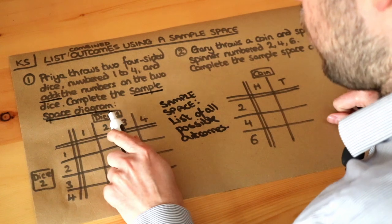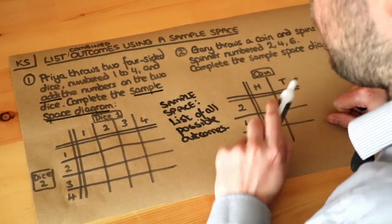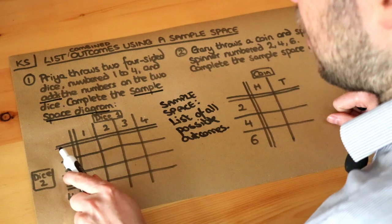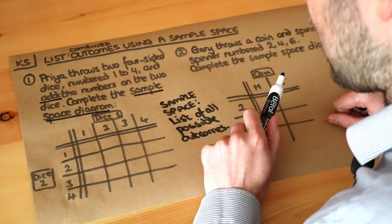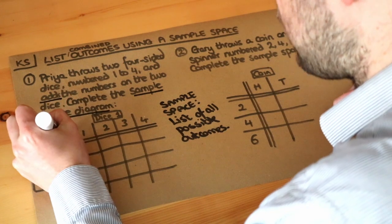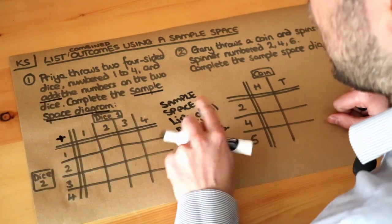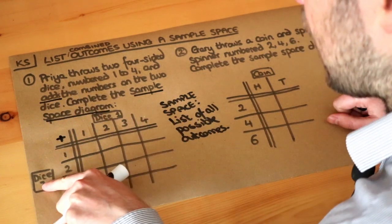So here we've got the first dice numbered one, two, three, four because it's a four-sided dice, and we've got the second dice numbered one, two, three, four. We're told we're adding those numbers together, so I'll put a little add sign here to remind us that we're adding the outcomes from dice one and dice two.